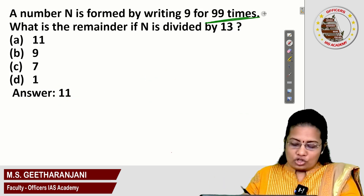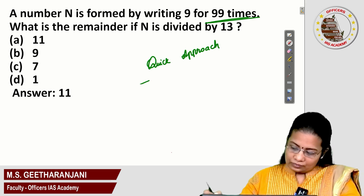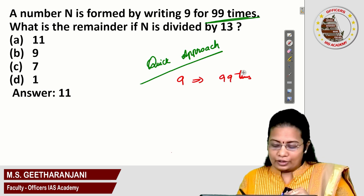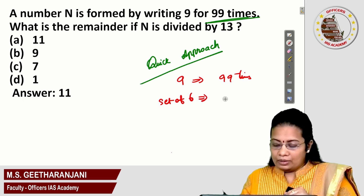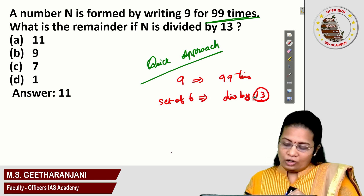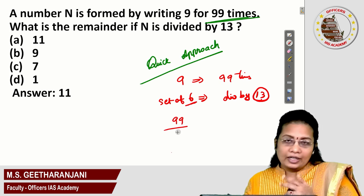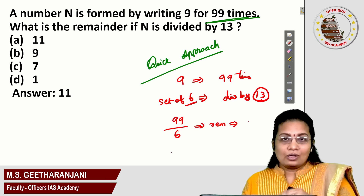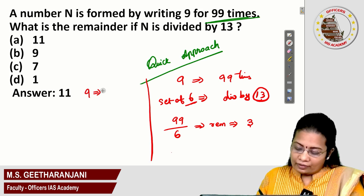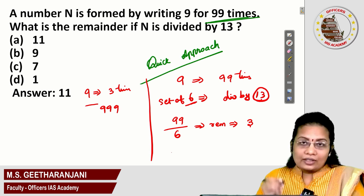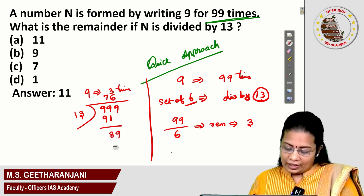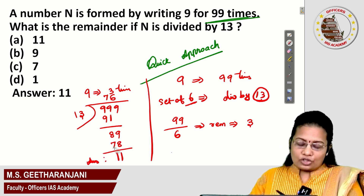What is the quick approach in the exam? Given is 9 is written 99 times. We know a set of 6 numbers is divisible by 13 according to the divisibility rule. Directly divide 99 by 6. The remainder is 3. So 9 is to be written 3 times — that is, triple 9, which is 999. Divide 999 by 13: 76 times 13 is 988, so the remainder is 11. The answer is 11. This is the short approach you can use in the exam.